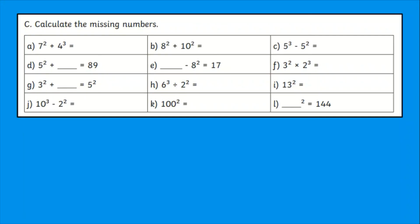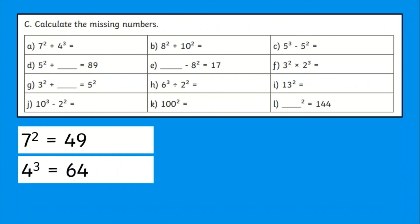For added challenge, there are also missing number problems involving squared and cubed numbers at the bottom of the sheet. Children will also have to apply their BIDMAS knowledge to solve these calculations correctly using their knowledge of the order of operations.